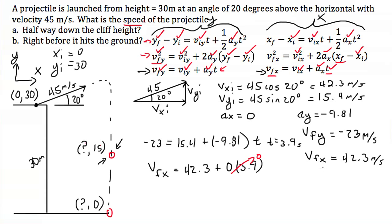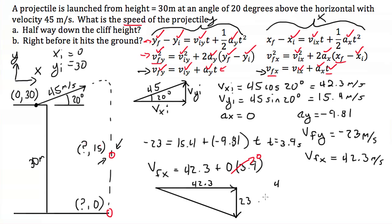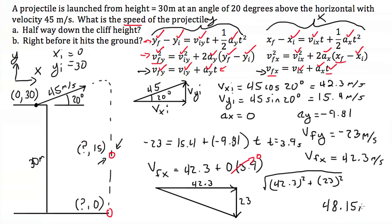We have vfx equals 42.3 m/s and vfy equals negative 23 m/s. To find the speed, we find the magnitude of the velocity vector using a right triangle: the hypotenuse equals the square root of 42.3 squared plus 23 squared. Plugging into the calculator, the speed for part a comes out to 48.15 meters per second.